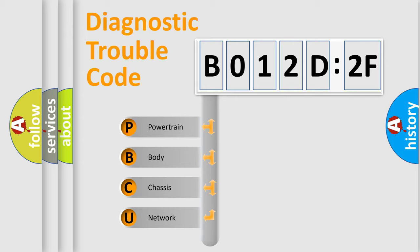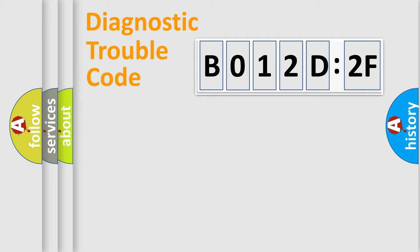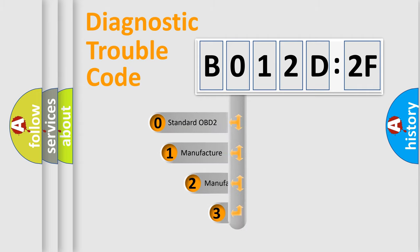We divide the electric system of the automobile into four basic units: Powertrain, Body, Chassis, and Network. This distribution is defined in the first character code.